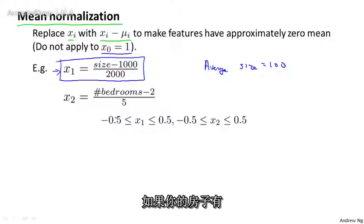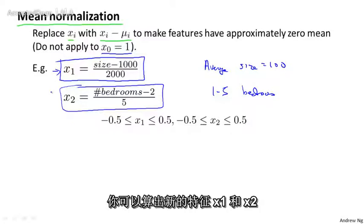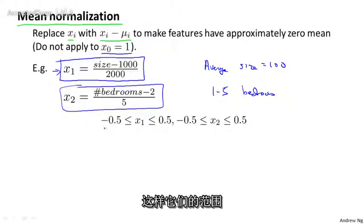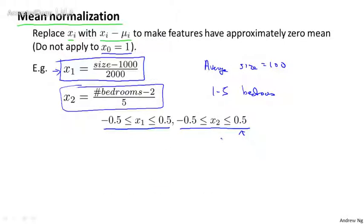...if on average a house has, say, two bedrooms, then you might use this formula to mean normalize your second feature x2. In both of these cases, you wind up with features x1 and x2 that can take on values roughly between -0.5 and +0.5. Actually, x2 can be slightly larger than 0.5, but close enough.